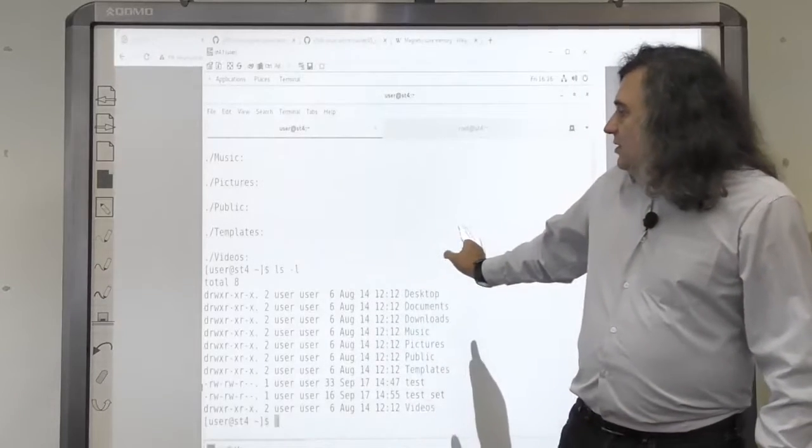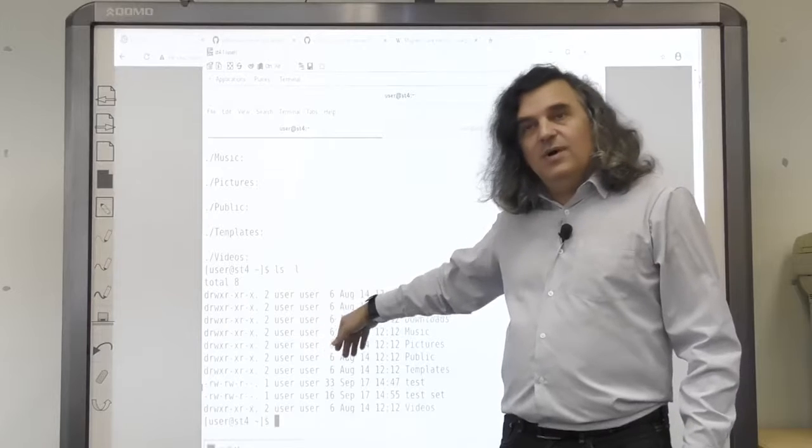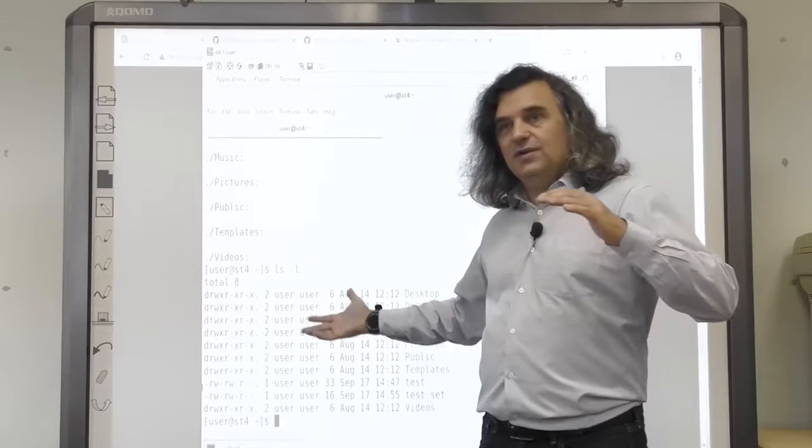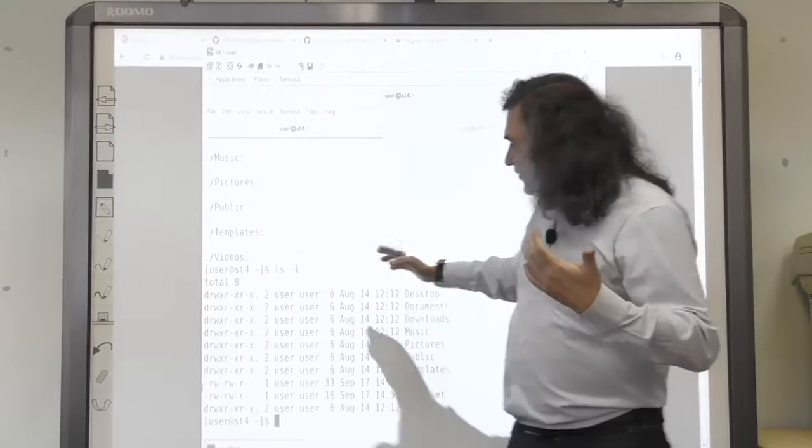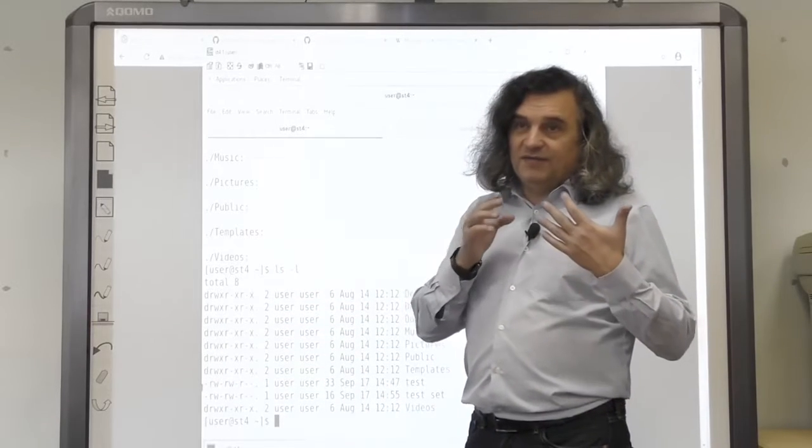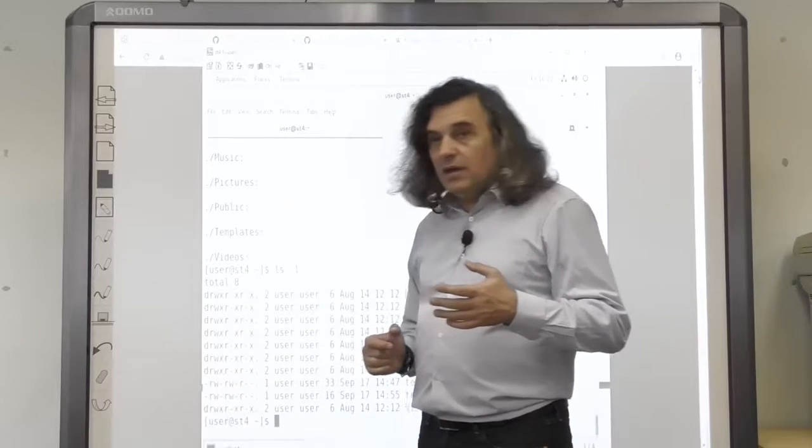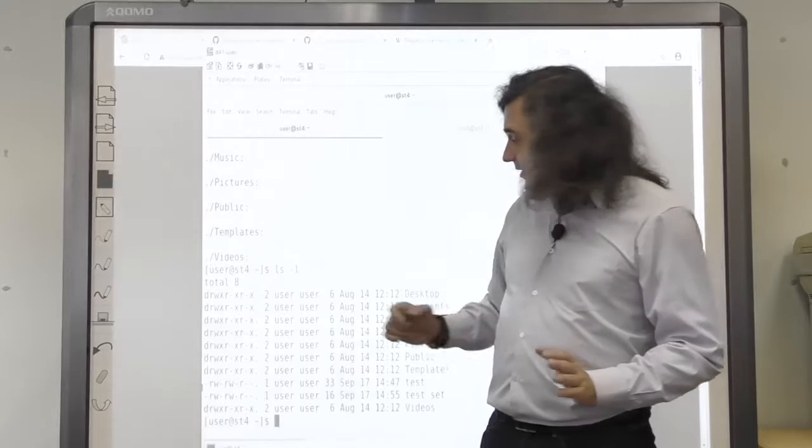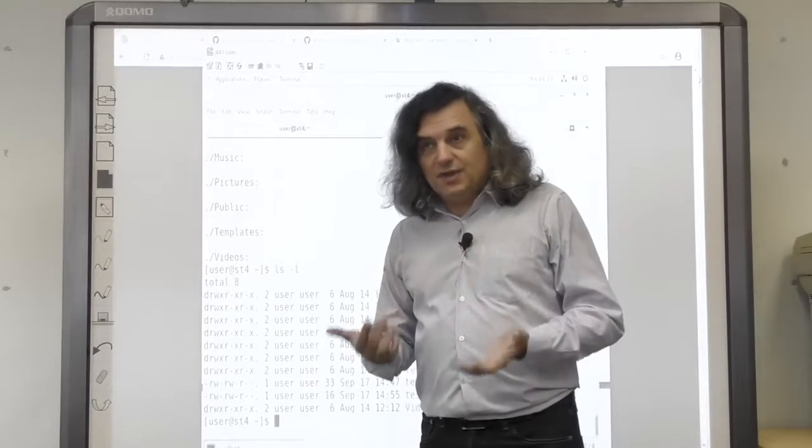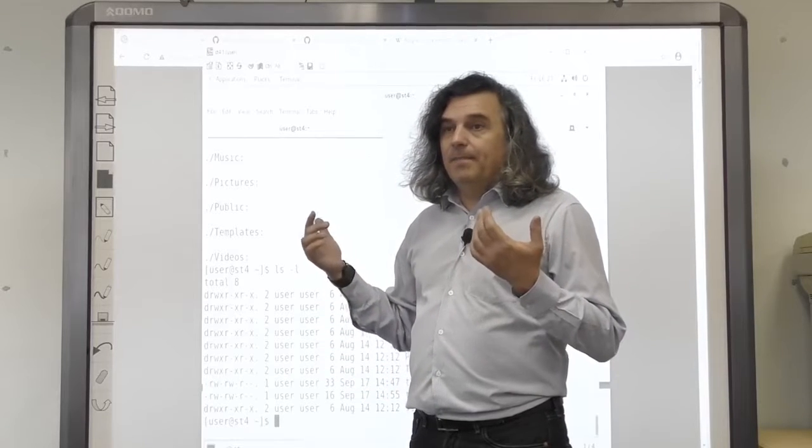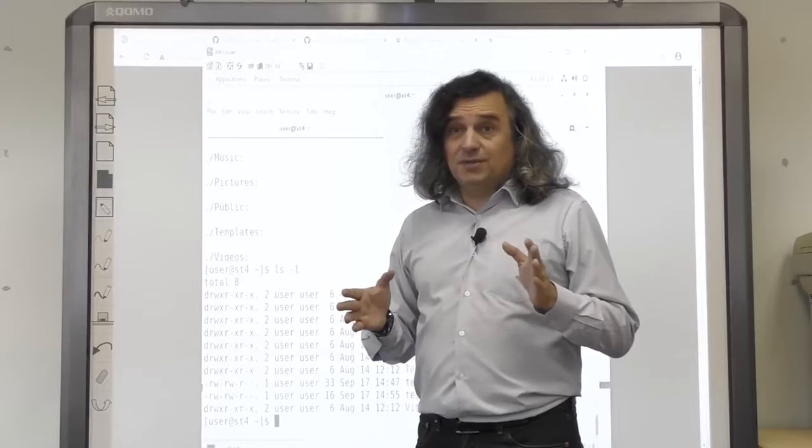Next, we see the table with information about files and directories in the corresponding lines. The first column is the file attribute. The first letter is the file type - d is a directory and so on.